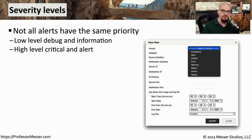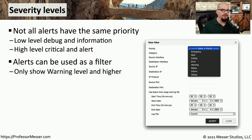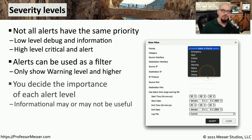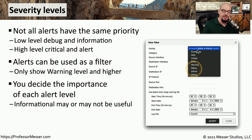This allows us as the network administrator to take action on the information we're receiving from all of these different logs. Some logs will contain informational details that may not need immediate action, whereas other logs may have critical details and alert information that require immediate action. We can use these severity levels as a filter — for example, viewing everything at a warning level or higher, or all debug information. You as the network administrator get to determine what information is important at any particular time.